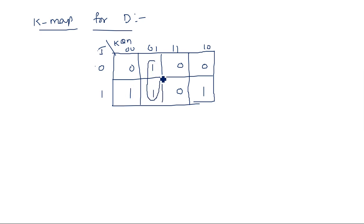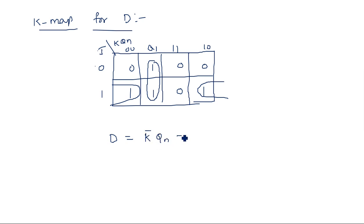Mapping these values into the K-map, we group them as product terms. From the vertical grouping we get K̄Qn, and from the other group we get JQ̄n. So D equals K̄Qn plus JQ̄n. This is our simplified Boolean expression for converting a D flip-flop into a JK flip-flop.